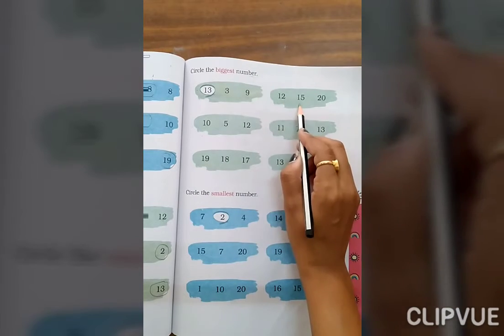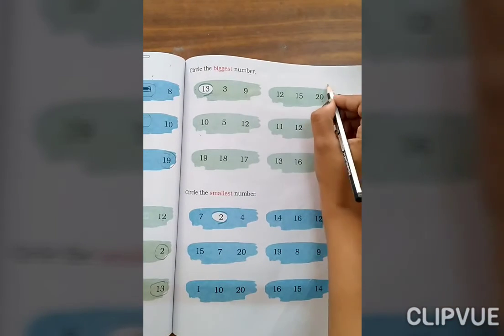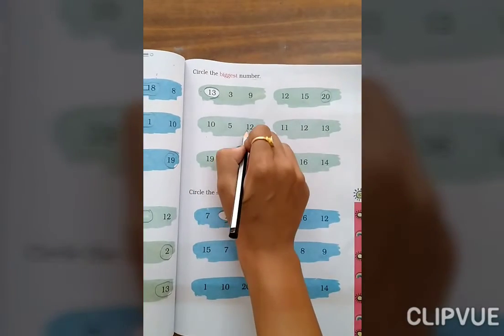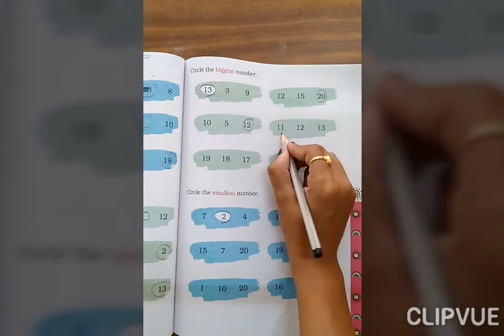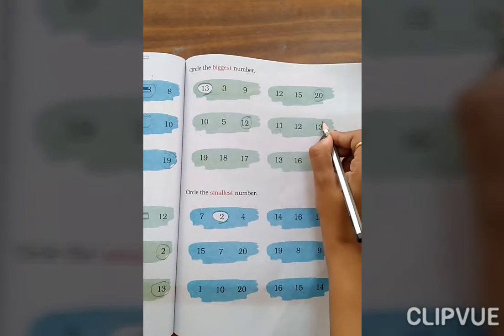Now 12, 15 and 20. इन तीनो में से biggest number कौन सा है? 20. Then you can circle it. 10, 5, 12. Which one is biggest? 12. 11, 12, 13. Which one is biggest? 13.